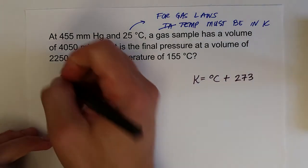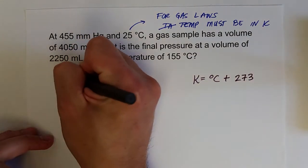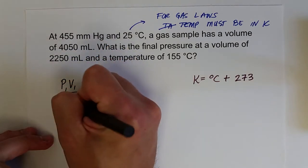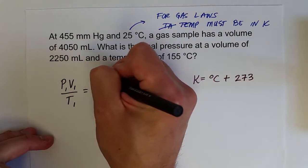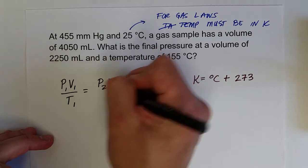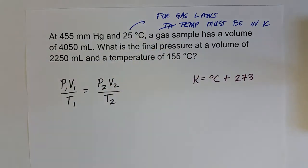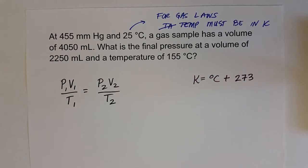All right, and so we've got our combined gas law, which is P1 V1 over T1 equals P2 V2 over T2. And so we just need to find out what we're looking for, and what our different variables are.